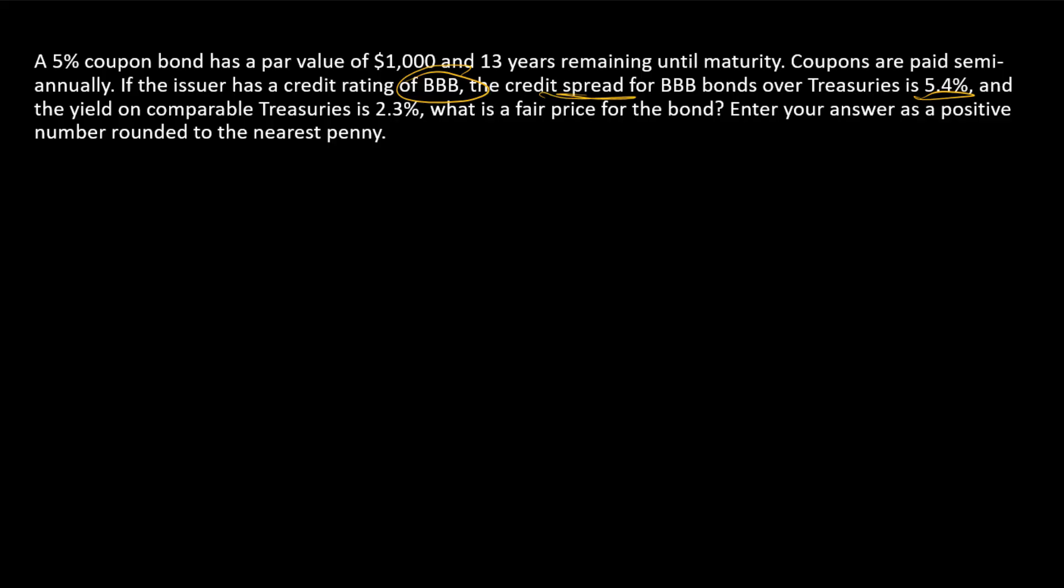So the yield to maturity then is just going to be the treasury yield for a treasury of a similar maturity plus the credit spread. So that gives us the yield to maturity, because remember the credit spread is just the difference between the yield to maturity of a risky bond and the yield to maturity of a safe bond of similar maturity.